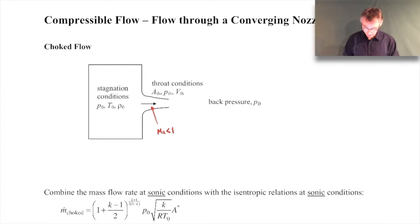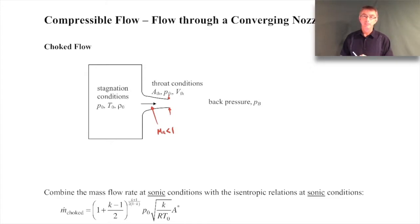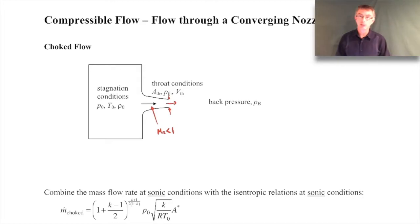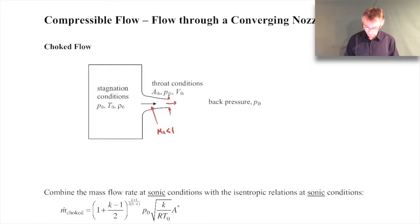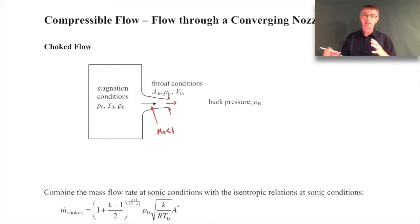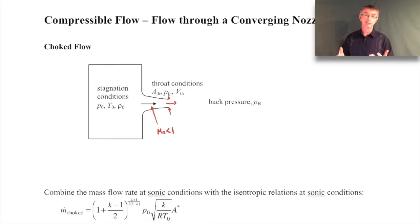We have subsonic flow through the converging section, and right at the throat — which is just at the exit, the minimum area — if we don't drop the back pressure too much, we'll have the highest velocity and Mach number there, but it's still subsonic. Because the exit is subsonic, the pressure at the throat will equal the surrounding back pressure. This is actually only true for subsonic flows; for supersonic flow, that doesn't have to be true.